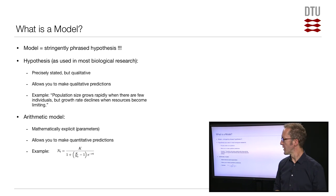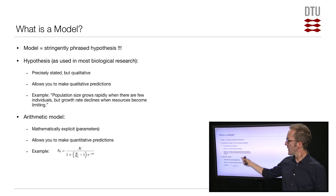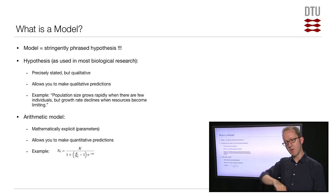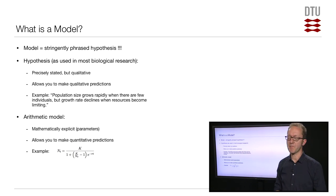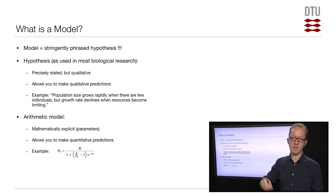As an example, if you are looking at the growth of a population, a qualitative hypothesis could be: the population will grow rapidly when there are few individuals, but later the growth rate will decline when resources become limiting — not enough space and food — then you'll see a decline. So first a rapid rise, then it'll taper off and hit a maximum. That's a qualitative hypothesis; it allows qualitative predictions such as 'growth rate will decline.'